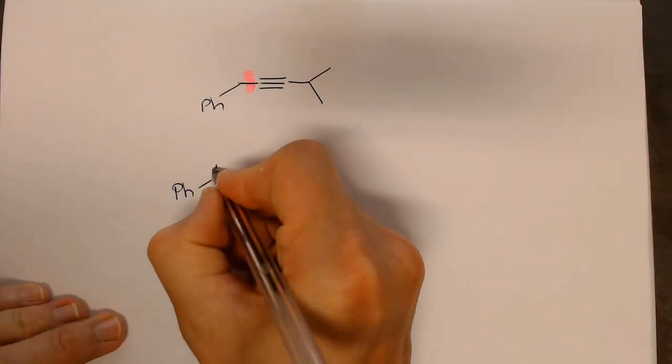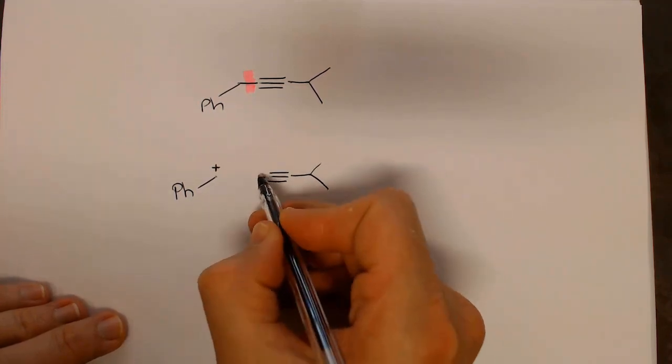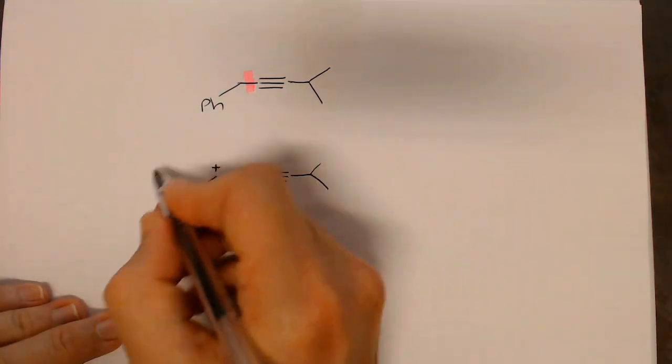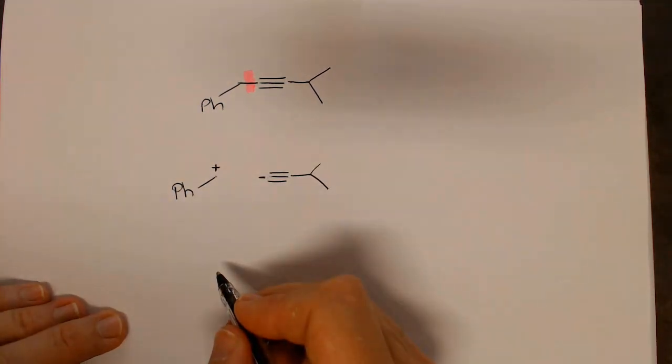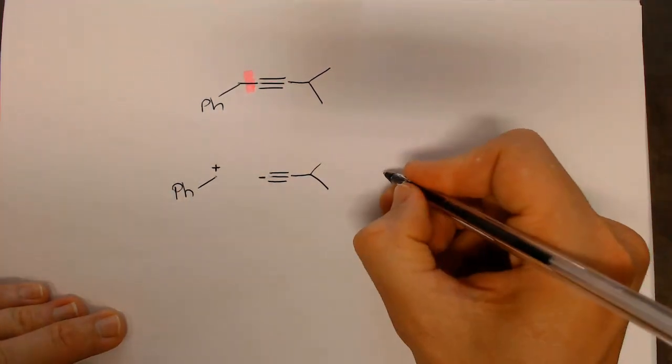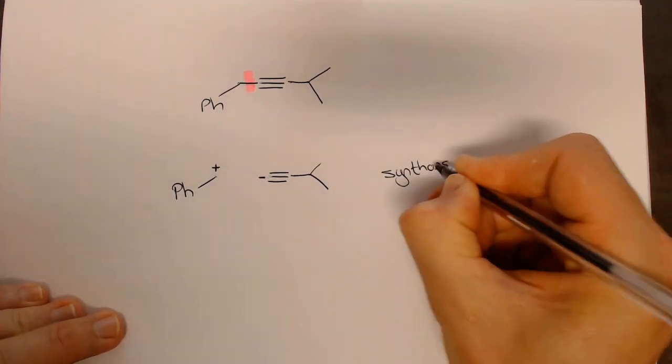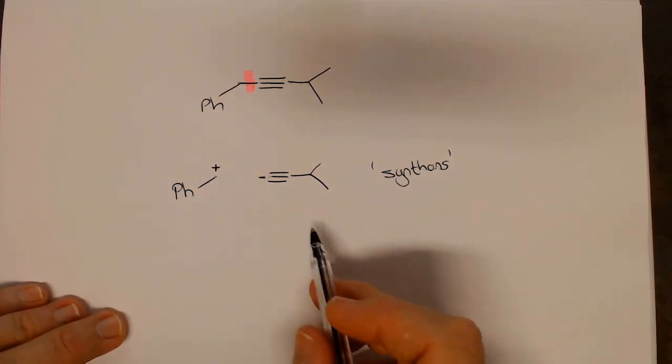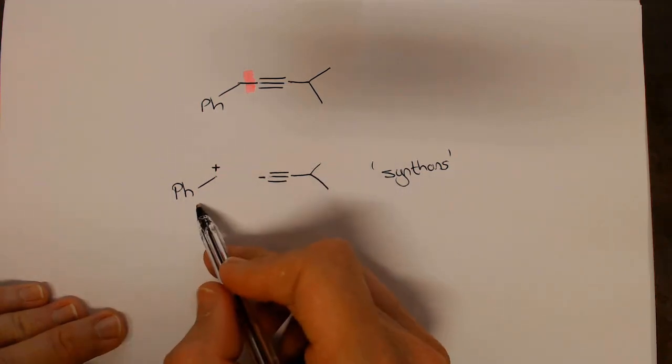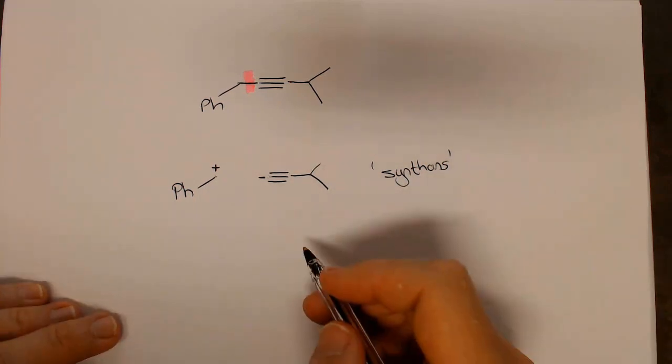This carbon over here needed to be the plus. If we can make this carbon plus we can get this reaction to occur and form that bond. You can't buy a bottle of toluene with a plus on it, but the equivalent of this - we talk about them being synthons. Synthons are not real molecules but rather this idea that we can find a molecule that represents this.